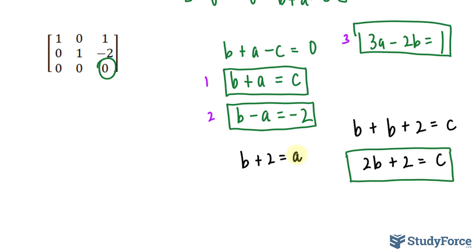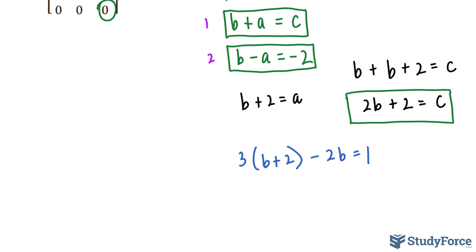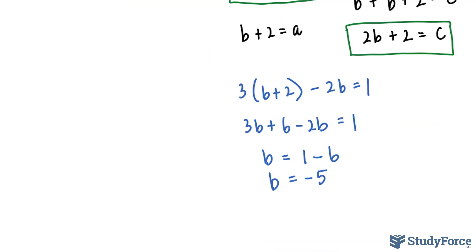Now I'll substitute what we found for A, B plus 2, into here. 3 bracket B plus 2 minus 2B is equal to 1, and this will give us what B is equal to. 3B plus 6 minus 2B is equal to 1. Collecting like terms, we get B is equal to 1 minus 6. B therefore is equal to -5. We found B, that is the second element of that unknown column.